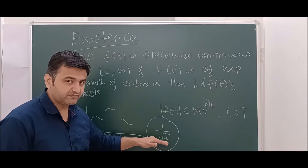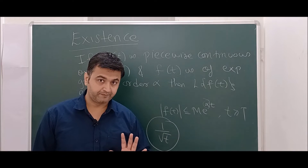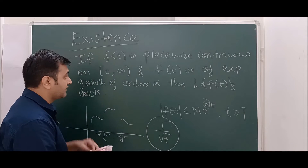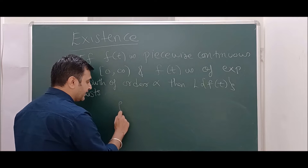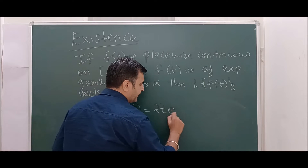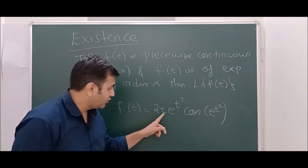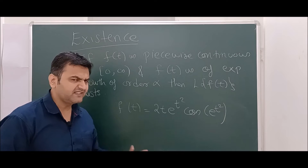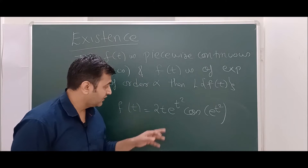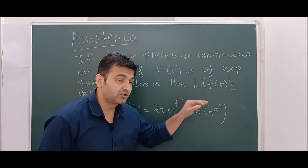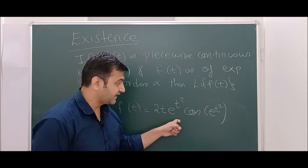However, 1/√t is a function of exponential growth, and its Laplace is √(π/2) times 1/√s. So this is a function which is of exponential growth but not piecewise continuous, yet its Laplace still exists. Another example: consider f(t) = 2t · e^(t²) · cos(e^(t²)). This is continuous, hence piecewise continuous, but e^(t²) grows very rapidly so it is not of exponential growth.